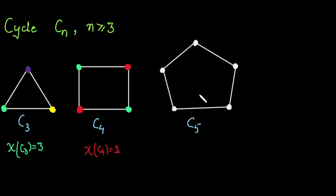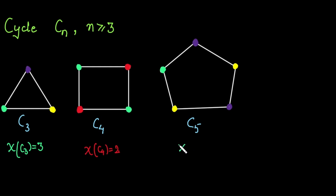For C5 with five vertices, we assign the first vertex purple and the second yellow. The third vertex is adjacent to the second but not the first, so we reuse purple. The fourth vertex is adjacent to the third but not the second, so we assign yellow. The last vertex is adjacent to both the first and fourth, so it cannot be purple or yellow — we assign a new color, green. The chromatic number of C5 is 3.